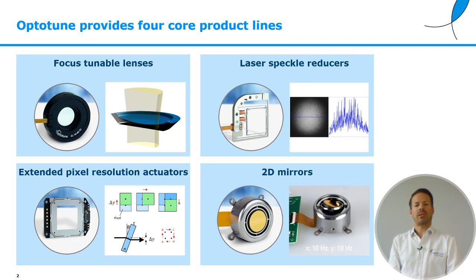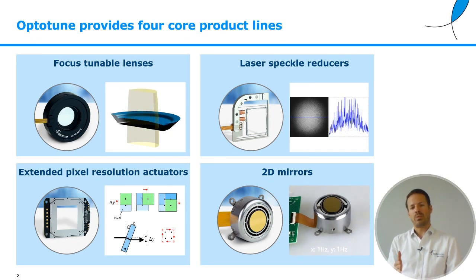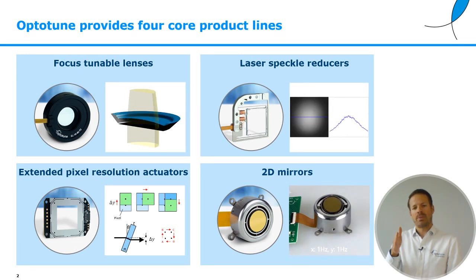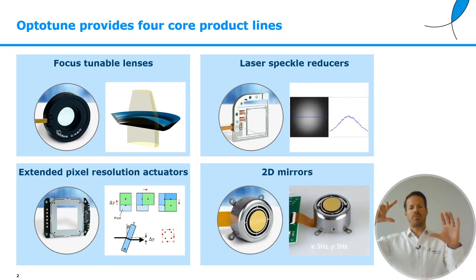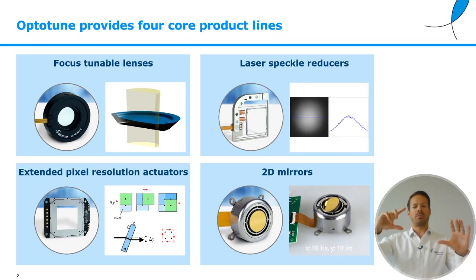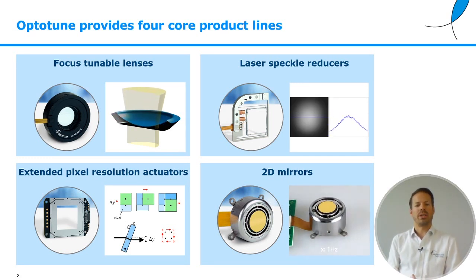Extended pixel resolution actuators are essentially a glass plate which we slightly tip-tilt in two directions, and that offsets the light. We can take a complete image and move it sideways, up, left, and down by half a pixel, essentially quadrupling the resolution. And that works in motion but also in imaging.